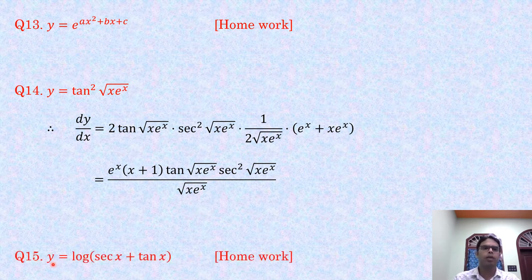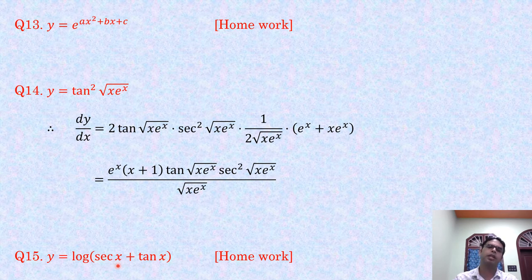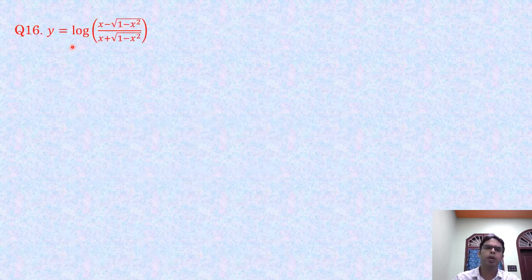Problem 15 (homework): y = log(sec x + tan x). Differentiate: log derivative is 1/(sec x + tan x), then multiply by d/dx(sec x + tan x) = sec x·tan x + sec²x. Taking common and simplifying gives sec x.